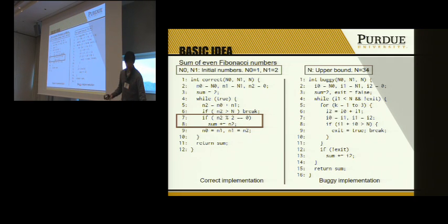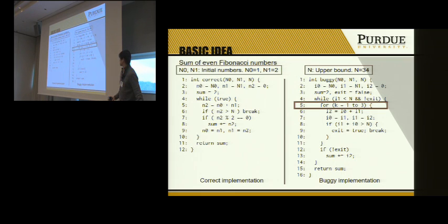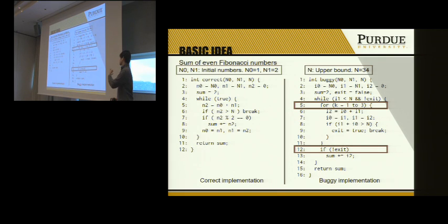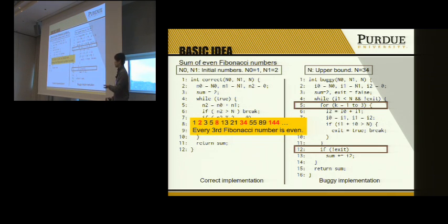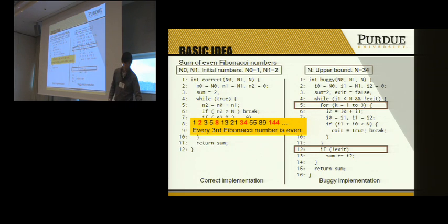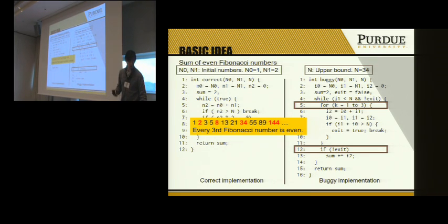In the buggy implementation, the most notable differences are a for loop which repeats three times, and differences in the condition. This program does not check whether the number is even or not, because the buggy implementation exploits the fact that every third Fibonacci number is even. These are substantial differences compared to the correct one, but they are still benign and do not cause the bug in this case.